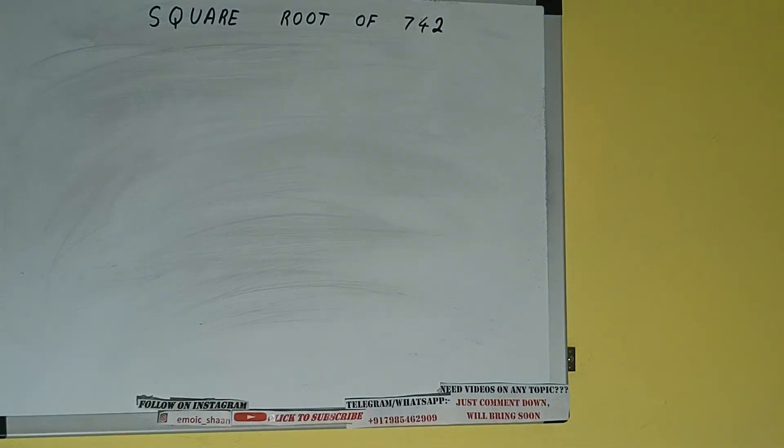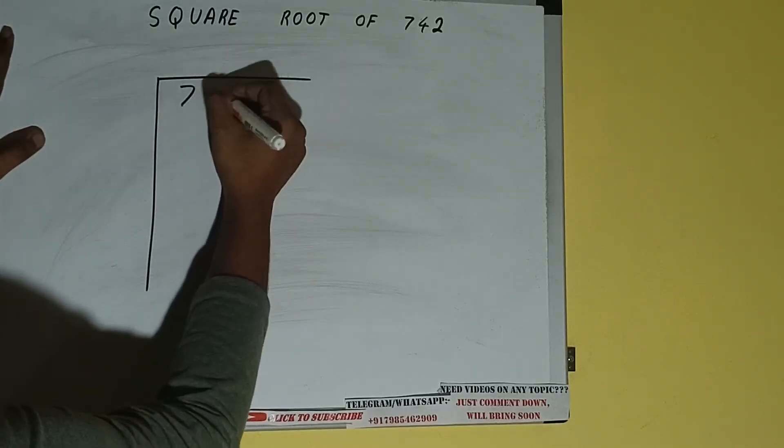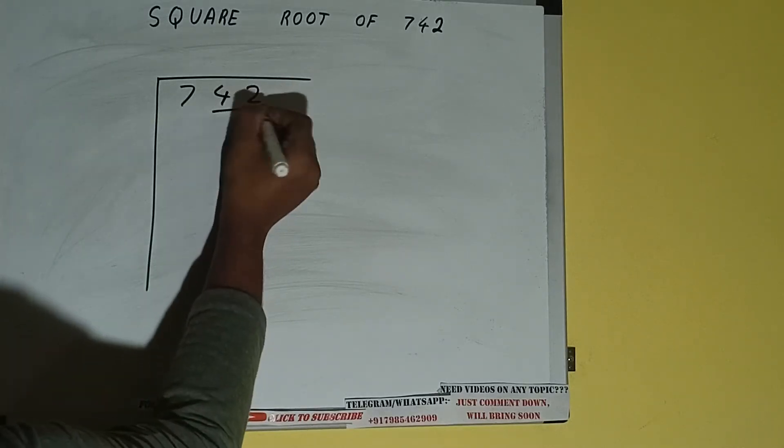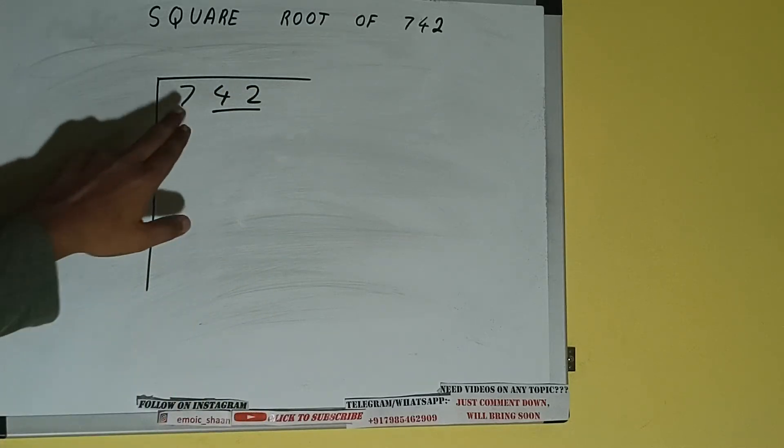Hello friends, in this video I'll be helping you with the square root of the number 742. Let's start. First of all, we need to write the number like this. The next thing we need to do is form pairs from the right hand side. So one pair will be this and this seven will be left out. So first we'll divide this seven and then we'll bring down the pair.